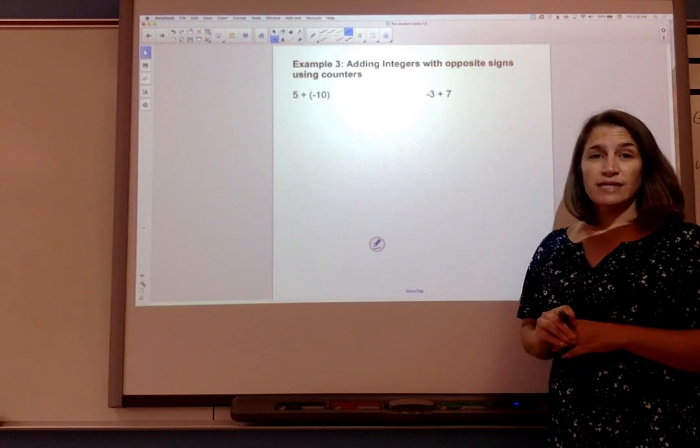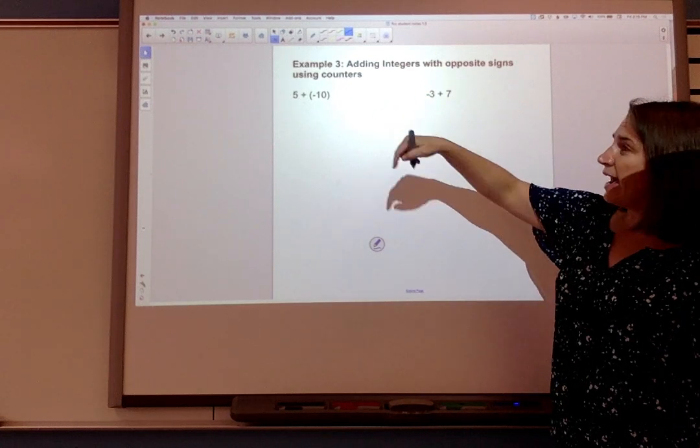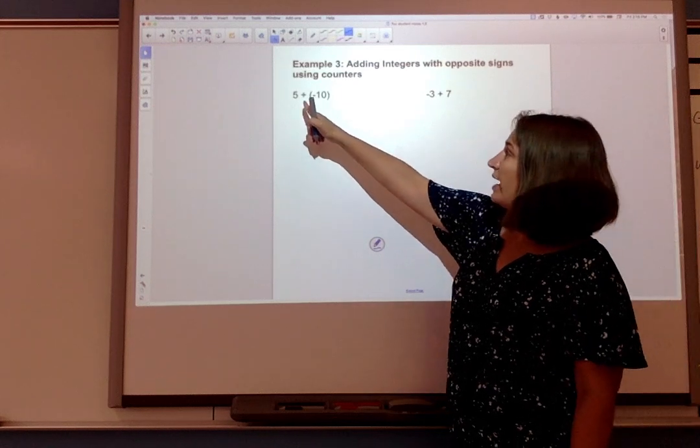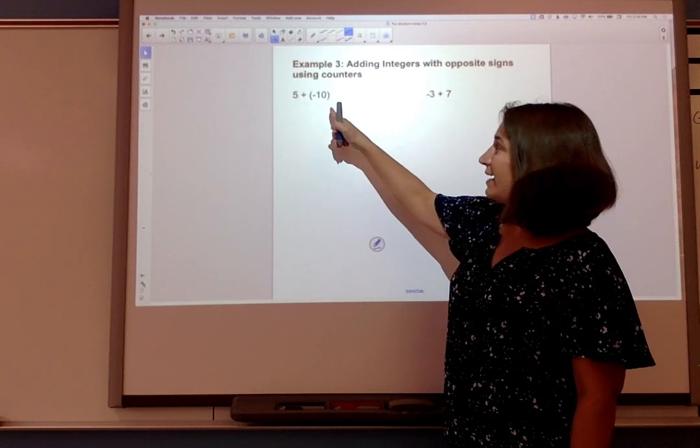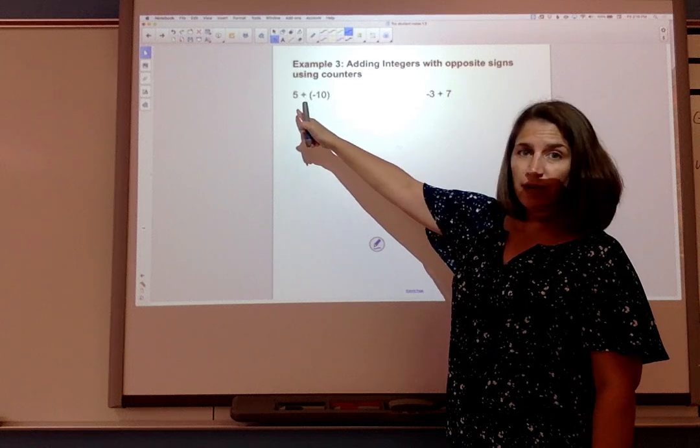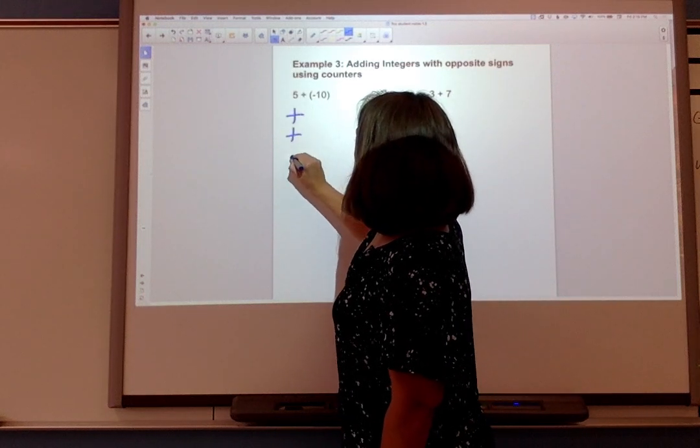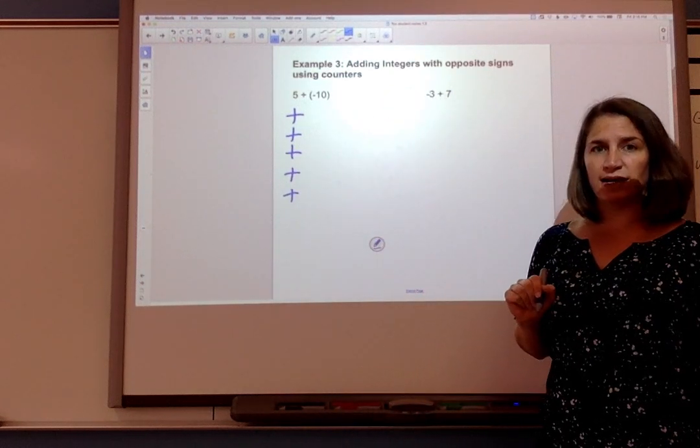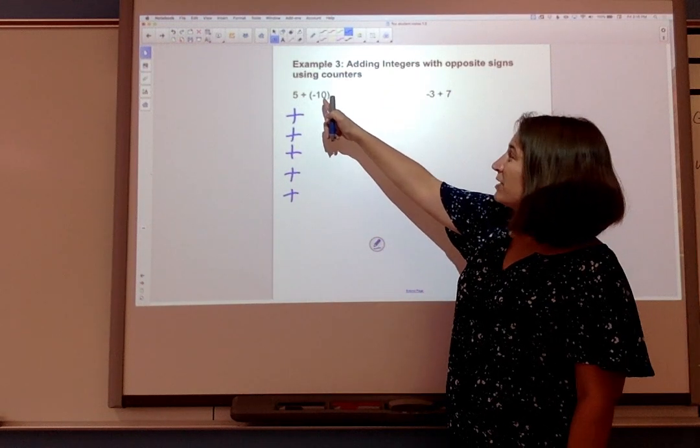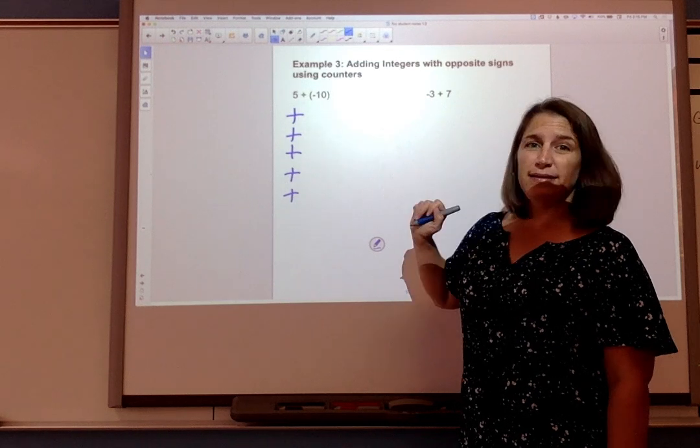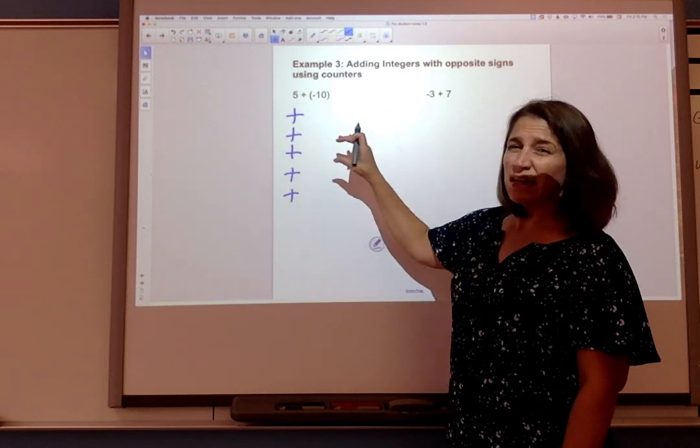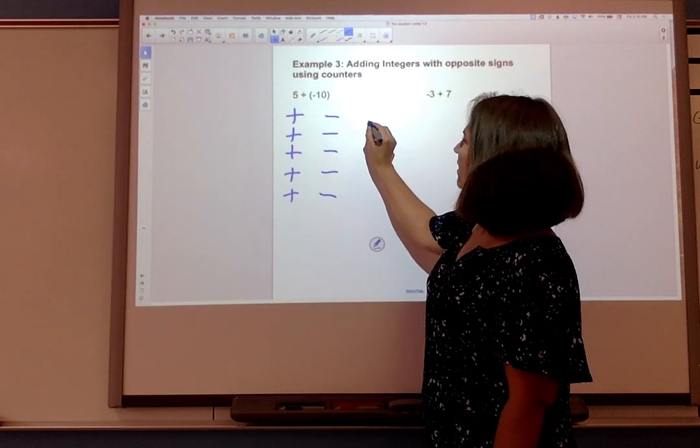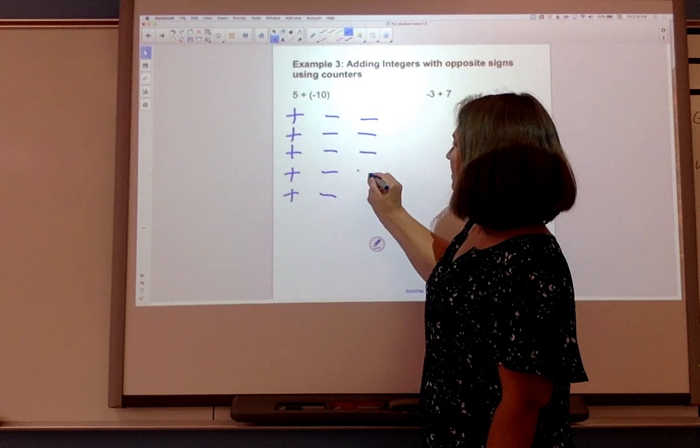So let's use that knowledge and add two integers with opposite signs using counters. So here we have 5 + (-10). So I'm going to start by modeling 5. So I'll add 5 plus signs and then I'm going to add 10 negative signs. Now I'm going to kind of line them up and I'll show you why. 1, 2, 3, 4, 5, 6, 7, 8, 9, 10.